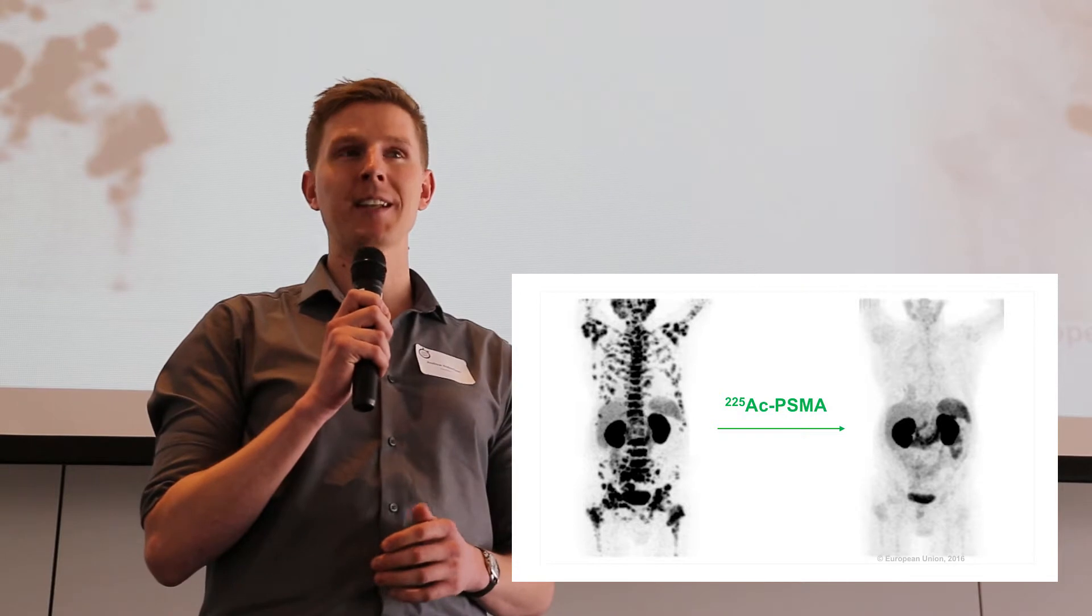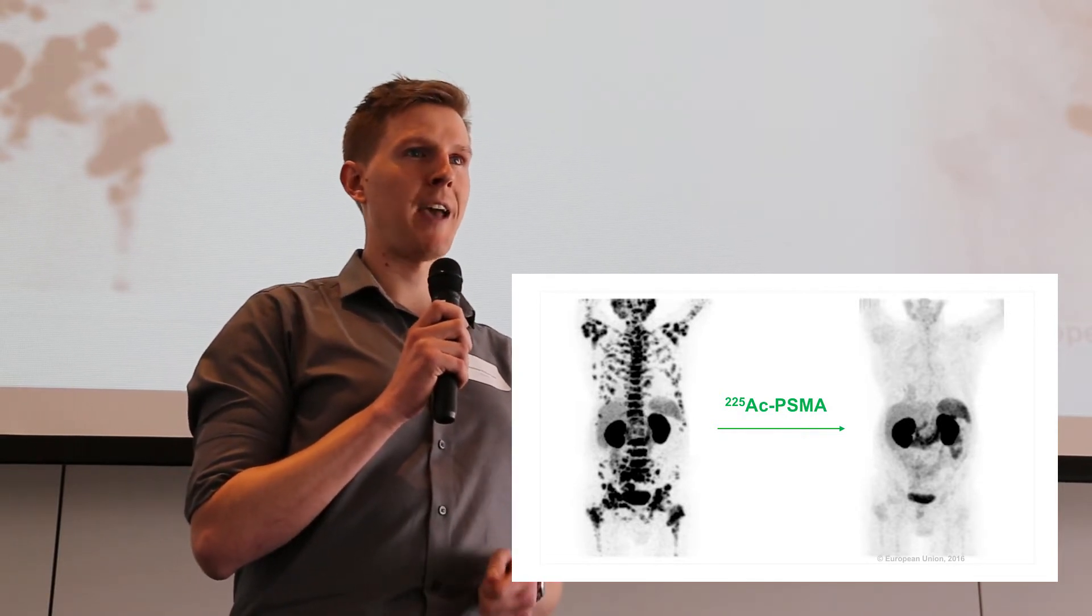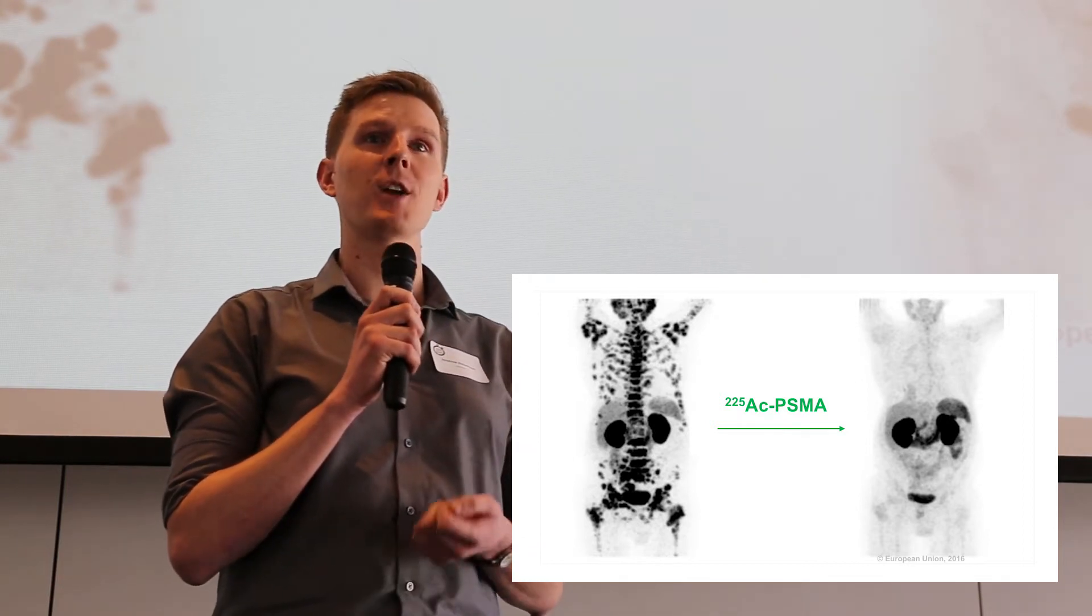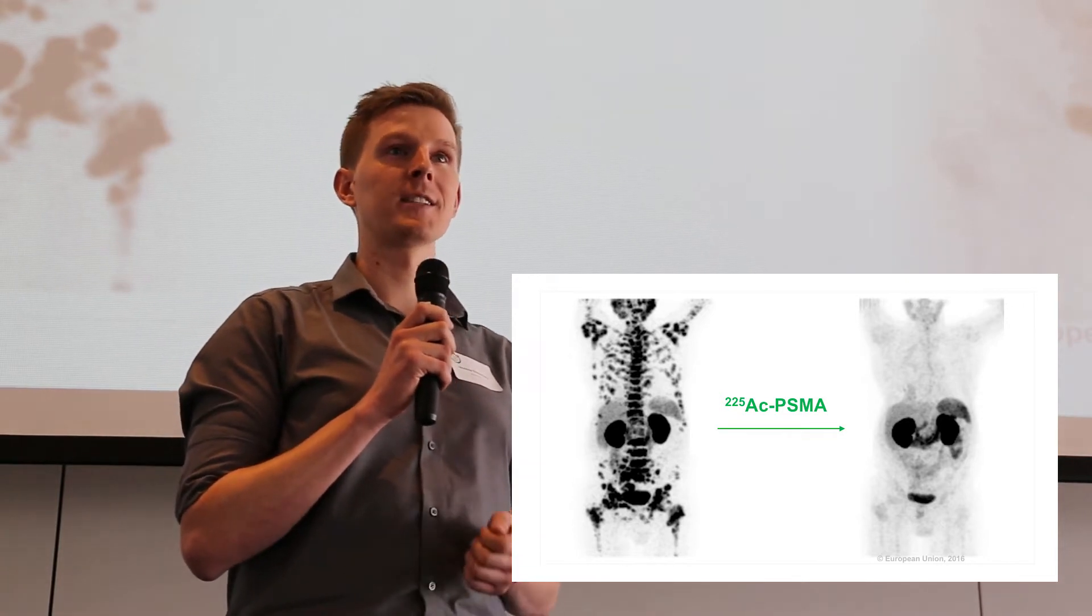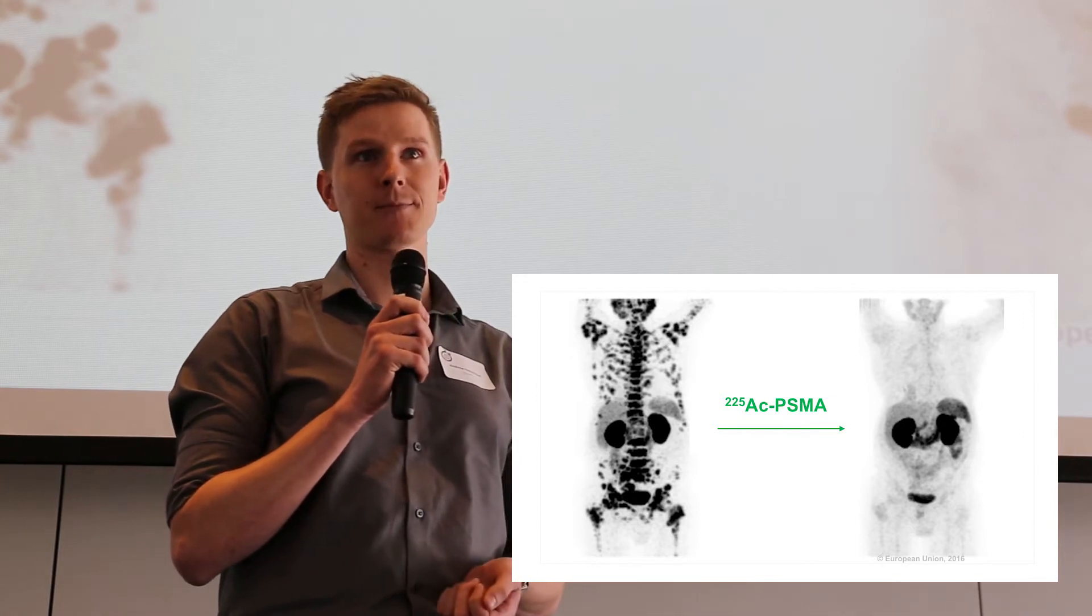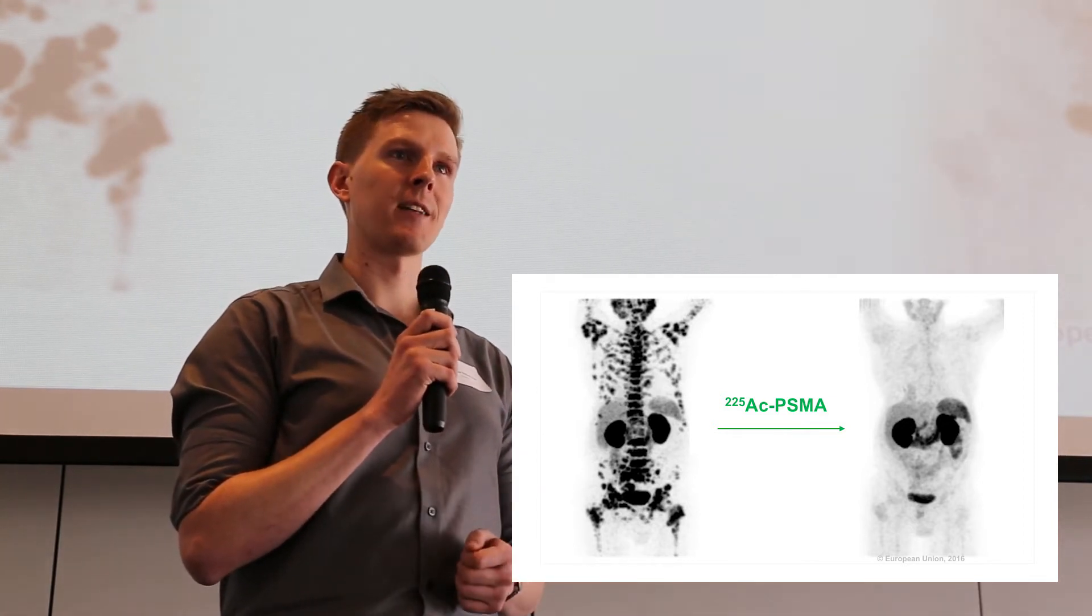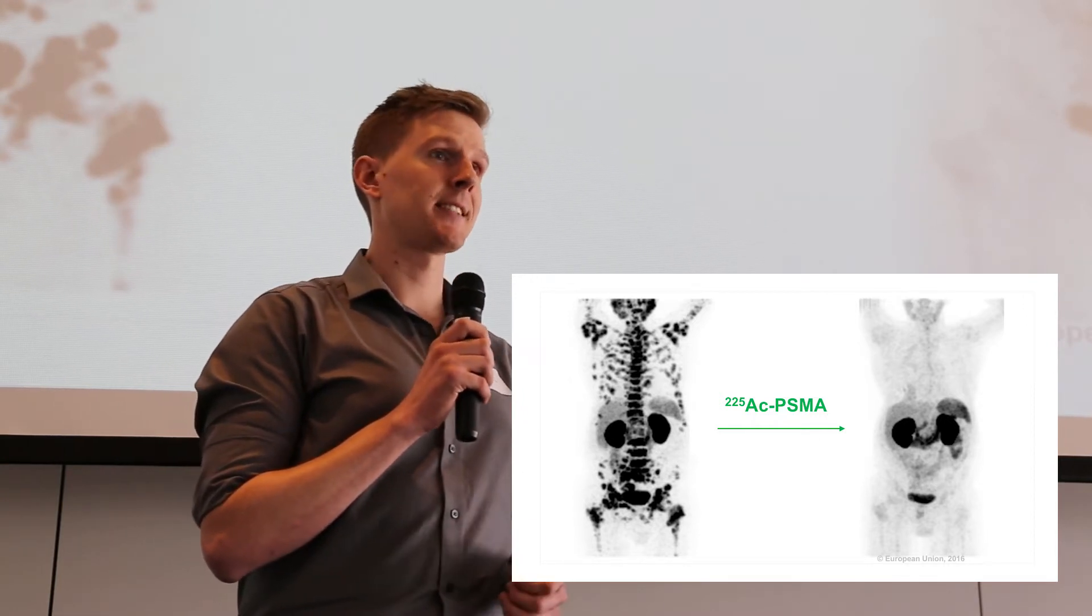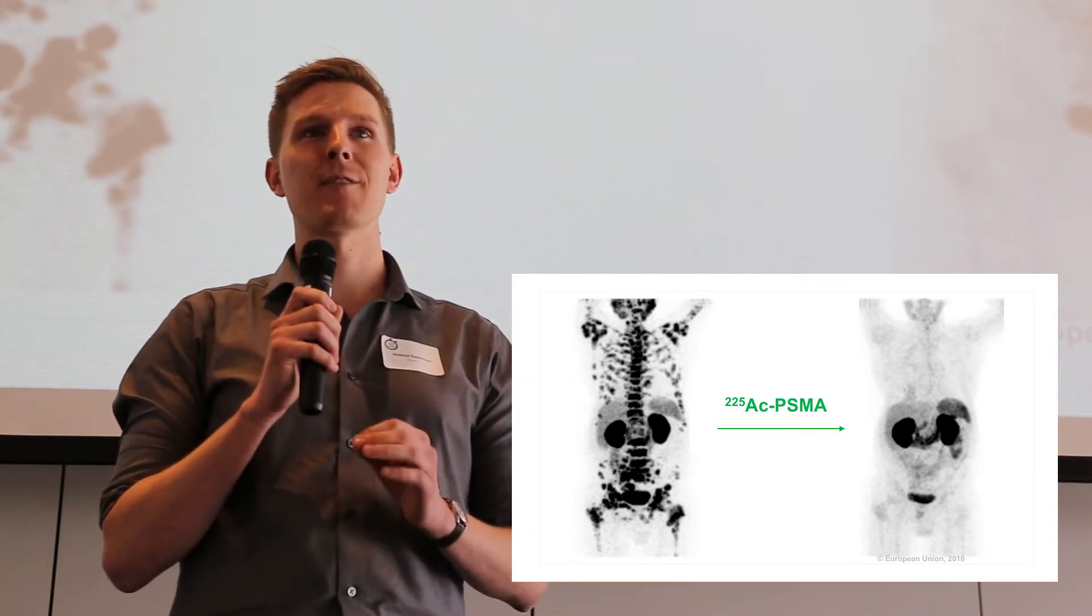This emerging type of cancer treatment is called targeted alpha therapy. These drugs combine a radioactive atom with a biological molecule that selectively seeks out and binds only to the surface of cancer cells. In this case, that targeted molecule is called prostate-specific membrane antigen, or PSMA. Onto PSMA is attached the radioactive actinium atom, which emits alpha radiation. This type of radiation is lethal to any cell it passes through, but only travels a distance less than the width of a hair.